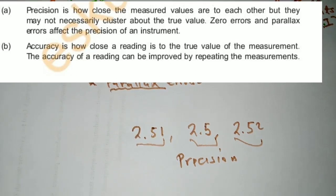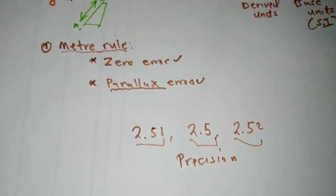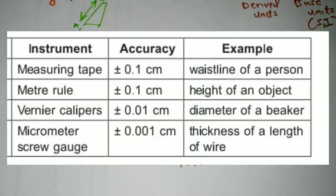The definition for accuracy is how close the reading is to the true value. So that's the meter rule. Looking at a table of instruments, apart from a meter rule, you have a measuring tape, you also have the vernier calipers — we'll look at that in the next video — and then the micrometer screw gauge.